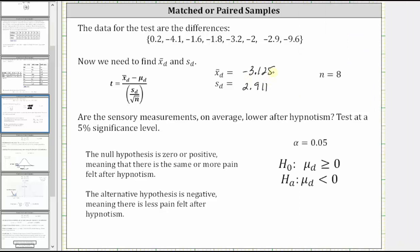Remember the question is, are the sensory measurements on average lower after hypnotism? Test at a 5% level of significance. So if the measurements are lower, then mu_d is less than zero, which is the alternative hypothesis. And if mu_d is not less than zero, mu_d is greater than or equal to zero, which is the null hypothesis.